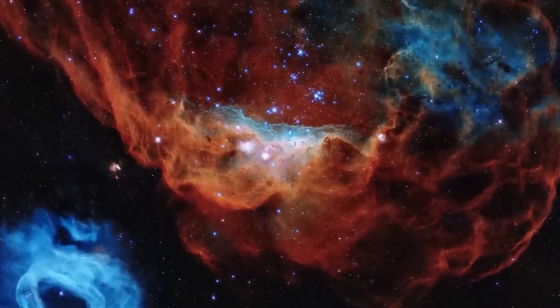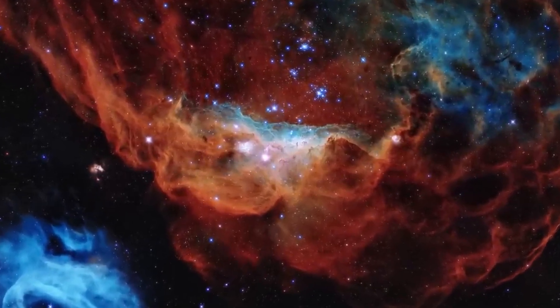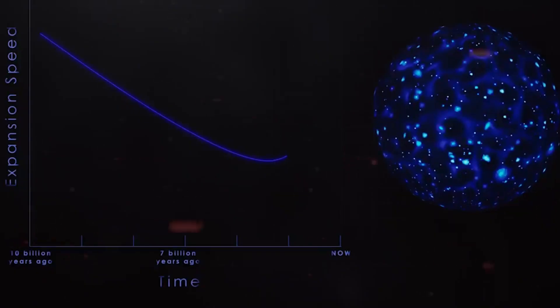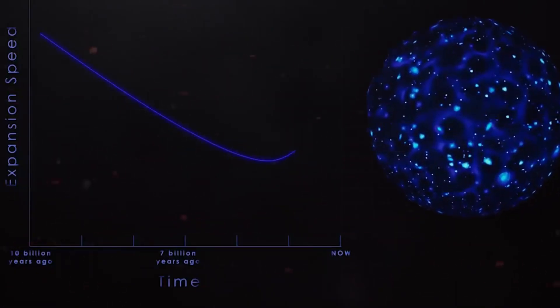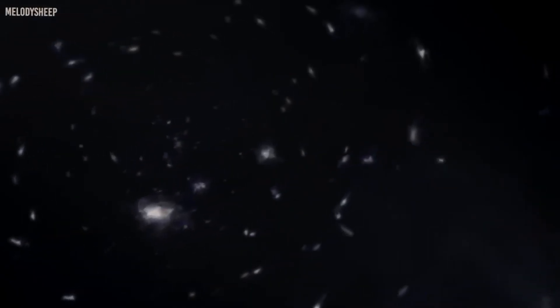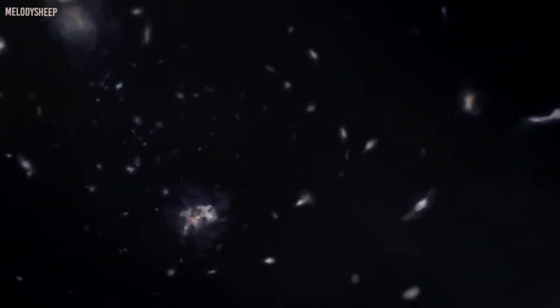All we need to do if we want to understand how our universe got its start is find a way to observe these waves, either directly or indirectly. While many ideas and experiments abound, none have returned a successful detection so far. We know what the spectrum of these fluctuations will look like and what imprint they'll have on the light within our universe, but we have no idea what their magnitude is. Different models of inflation make different predictions, and only by measuring them can we determine which model accurately describes our universe.